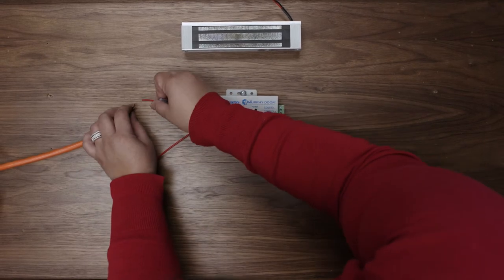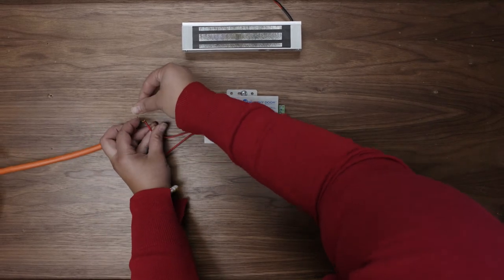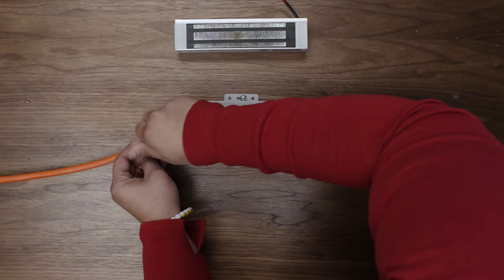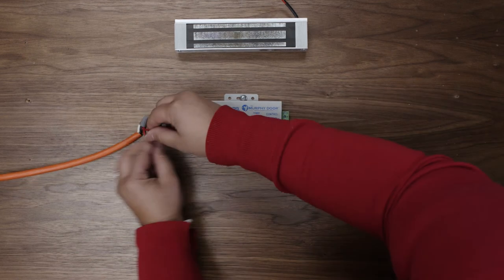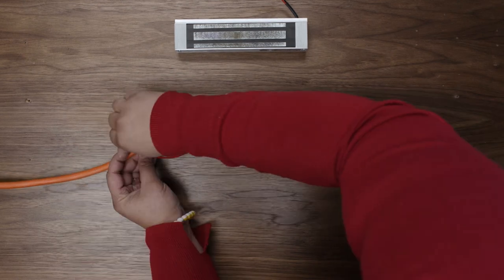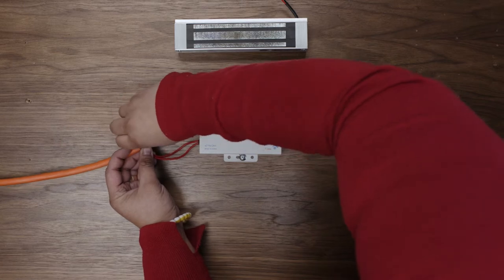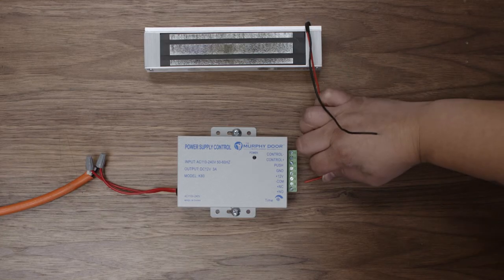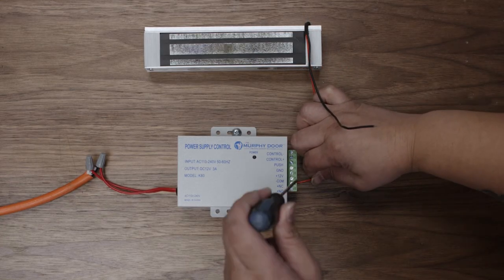Begin by connecting the power supply box to your power source. Connect the red wire from the magnet to the NC positive terminal on the power supply.